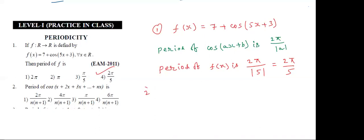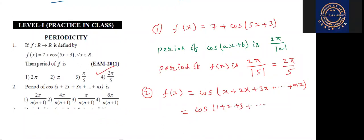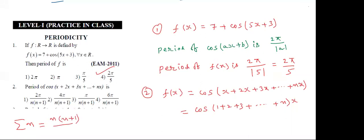Next, the second question. F(x) is equal to cos of (x + 2x + 3x + ... and so on). Inside the bracket, take x common — the remaining terms are 1 plus 2 plus 3 plus 4 and so on up to n. This is the sum of n natural numbers, that means sigma n. The formula for sigma n is n(n+1) by 2.